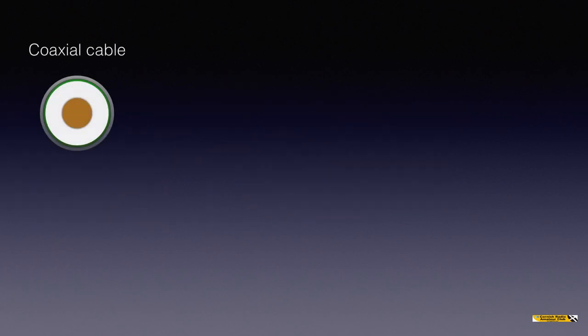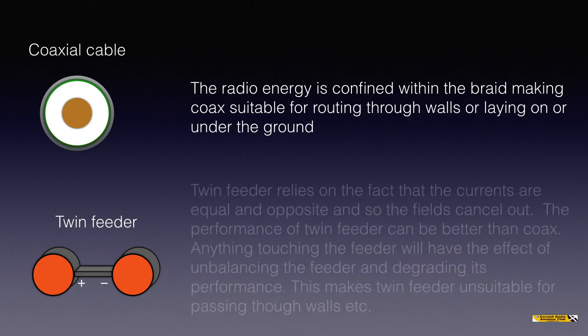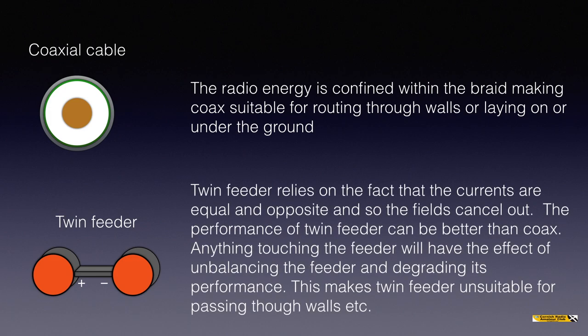The radio energy is confined within the braid, making coax suitable for routing through walls or laying under the ground. The braid is at earth potential, arranged like that in the shack. Twin feeder relies on the fact that the currents are equal and opposite, so that the fields cancel out. Performance of twin feeder can be better than coax. However, anything touching the feeder will have the effect of unbalancing the feeder and degrading its performance, making twin feeder unsuitable for passing through walls, etc.